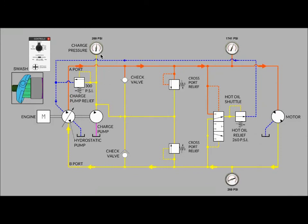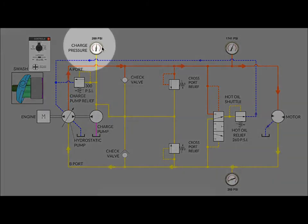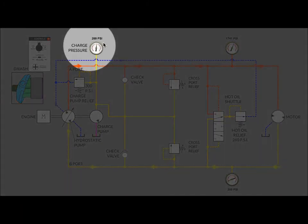A common question that gets asked in some hydrostatic systems is why does the pressure on the charge pressure gauge seem to drop a little bit when the main pump is displacing fluid as opposed to when the pump is in neutral. Let me show you what I mean. Right now our charge pressure gauge is reading 260 psi. If I return the operating lever to the neutral position, watch that charge pressure gauge.